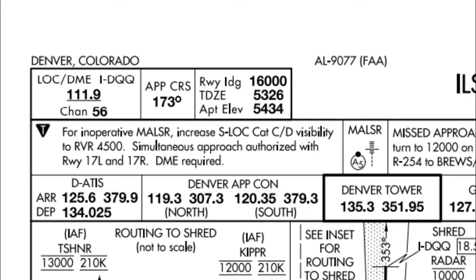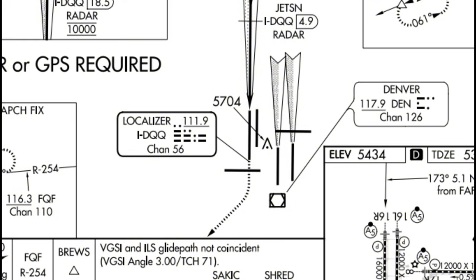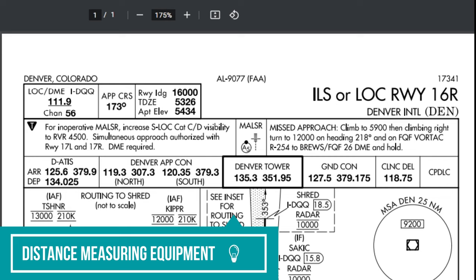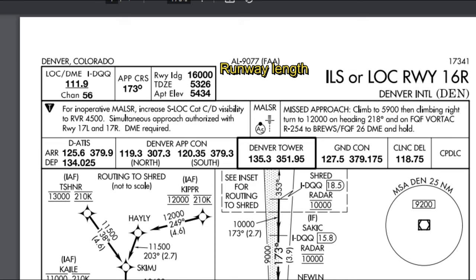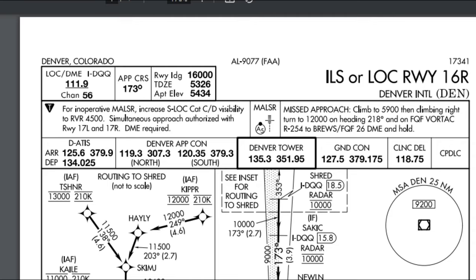If you do not have a channel number underneath your localizer frequency, that means there is no DME on that localizer, and you should look for another VOR on or near the runway to get your DME from. DME stands for distance measuring equipment. Next to that we have the approach course of 173 degrees, and next to that we have the runway landing length, the touchdown zone elevation, and the airport elevation. Keep in mind that the airport elevation and the touchdown zone elevation can be different.